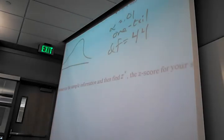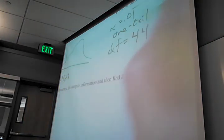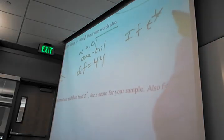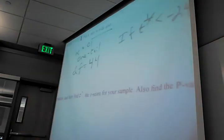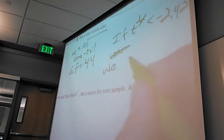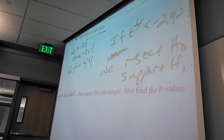I want to use 2.423 since it's here. It's negative. If t-star is less than negative 2.423, we can reject H0 and support H1. If it's greater than or equal to, we fail to reject H0 and fail to support H1. We just fail all around.